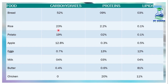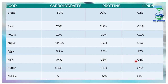Similarly, rice has 23% carbohydrates, 2.2% proteins and 0.1% lipids. Potatoes have 19% carbohydrates, 2% proteins and 0.1% lipids. Apple has 12.8% carbohydrates, 0.3% proteins and 0.5% lipids. Eggs have 0.7% carbohydrates, 13% proteins and 12% lipids. Milk has 4% carbohydrates, 3% proteins and 4% lipids.